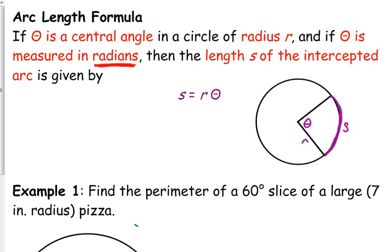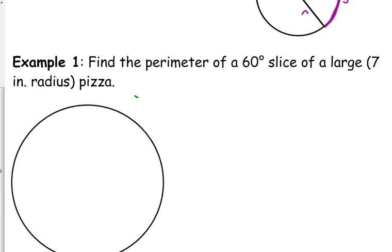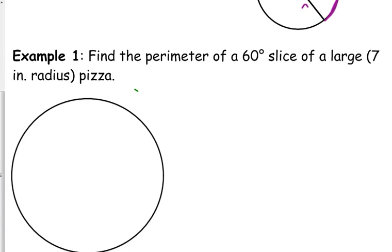Alright, so let's look at an example of a problem here. A little bit about an application problem. So, it says find the perimeter of a 60-degree slice of a large, and we're going to say a large has a 7-inch radius pizza. Well, yeah, I mean, 7-inch radius, 14-inch pizza, pretty normal for a large, right?